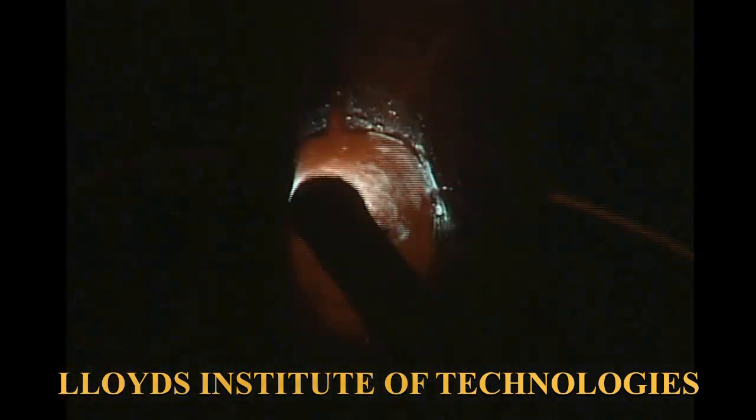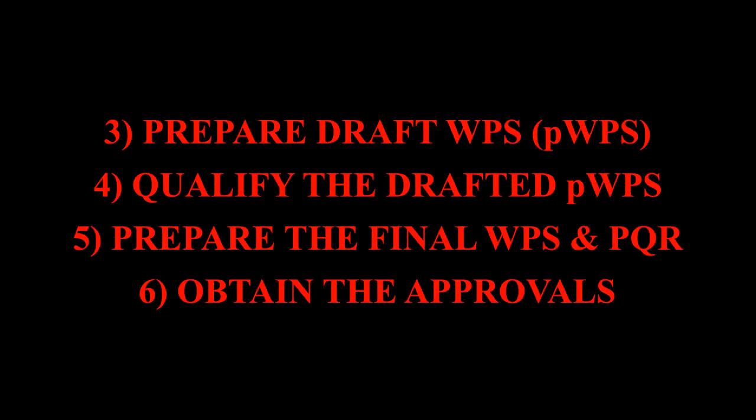Now we will be discussing the seven basic steps for WPS writing. Step one: identify the welding process, type of welds, and the applicable welding standard. Step two: determine the method of approval. Step three: prepare a draft WPS, that is a PWPS — preliminary WPS. Step four: qualify the drafted PWPS, which means you will have the welder perform a welding test as per your preliminary welding procedure specification.